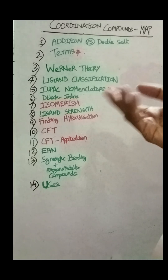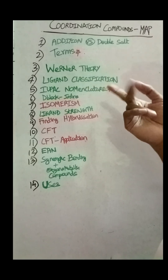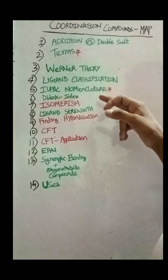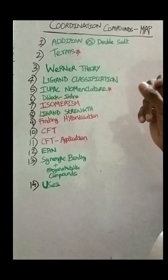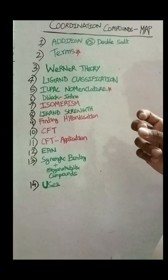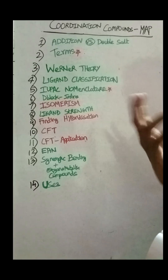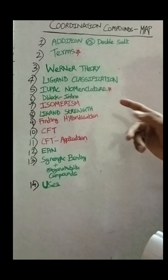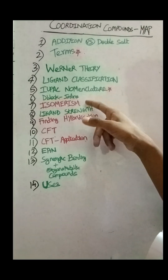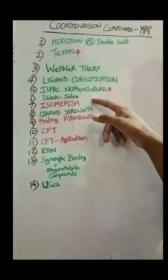So if you want to learn the D-Block, there is a small intro. Then, Isomerism — Isomerism is very important. It is a little complicated and a little lengthy. If you want to revise this topic, that is the answer.